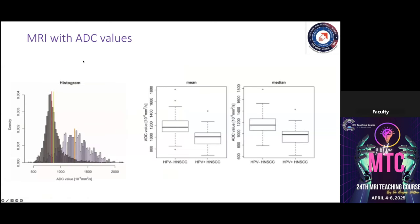When performing MRI, diffusion-weighted images are important because we want to differentiate HPV-positive versus HPV-negative tumors, as these have significant prognostic implications.